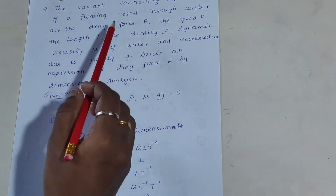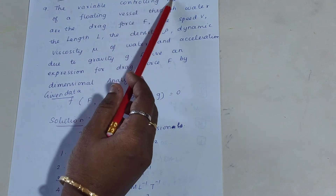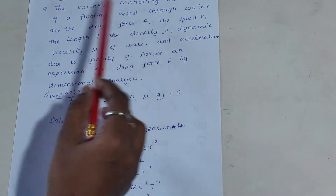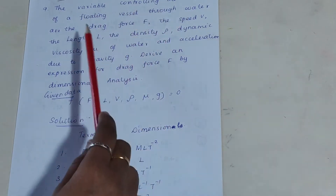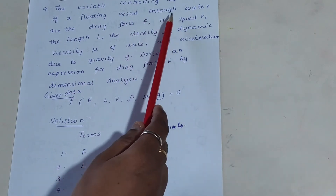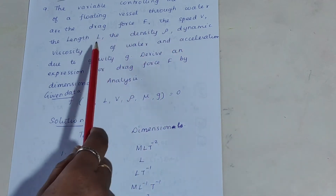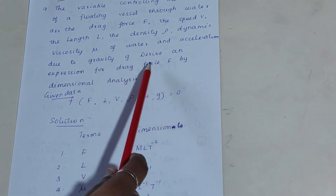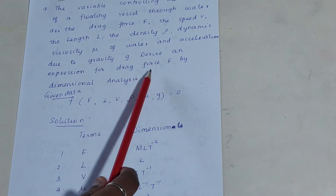In this video we are going to see the KTU Christine paper FM2 December 2019 Part C problem. This is a dimensional analysis problem: the variables controlling the motion of a floating vessel through water are drag force, speed, length, density, dynamic viscosity, and acceleration due to gravity. Derive an expression for the drag force by dimensional analysis.